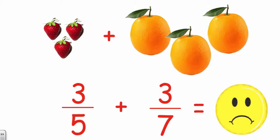When we look at this first example, three-fifths plus three-sevenths, we're adding two different things. We have strawberries plus oranges, if you will, or three-fifths plus three-sevenths, two very different denominators. We cannot add these fractions the way they are. We would need to find common denominators before we could add them.